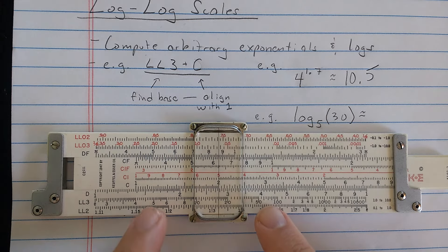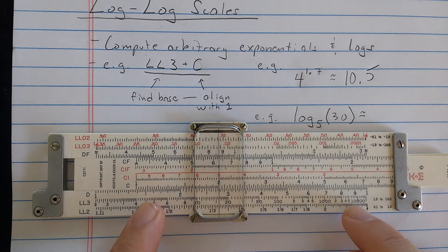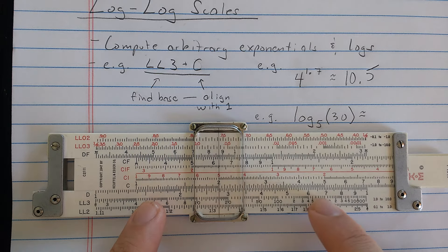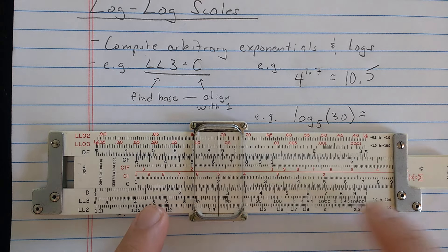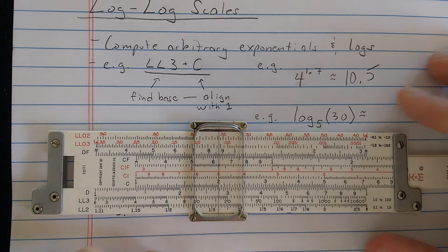You can see that the numbers on the log-log-3 scale kind of explode here to the right, because what happens? Well, by the time I get to 4 to the 9, that's a really big number. And so we kind of have this exponential explosion happening here on the right.